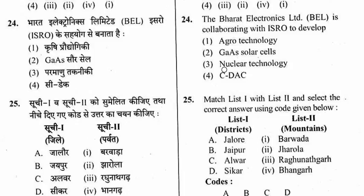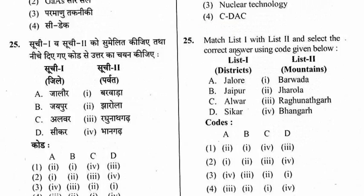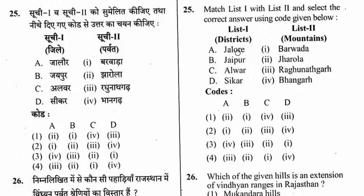Question 25: Match mountains with their districts. The right option is option 1. The mountain in Jalor district is Jharula. The mountain in Jaipur district is Barwada. The mountain in Alwar district is Bhangarh. The mountain in Sikar district is Raghunathgarh.